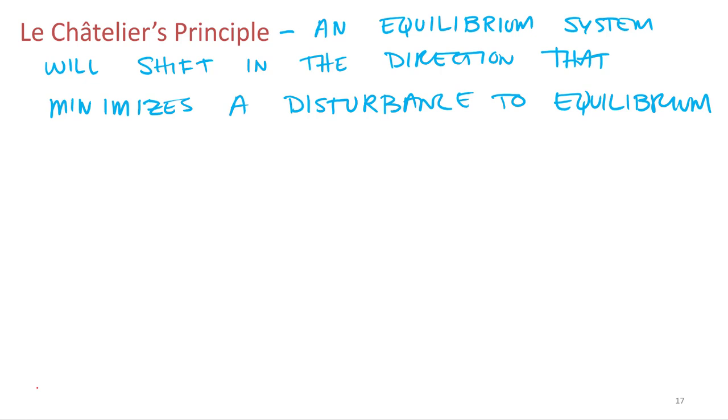So the two words in there that I think we need to talk a little bit more about, explain, are shift—what do we mean when we say it shifts? And then disturbance—what is a disturbance to equilibrium?